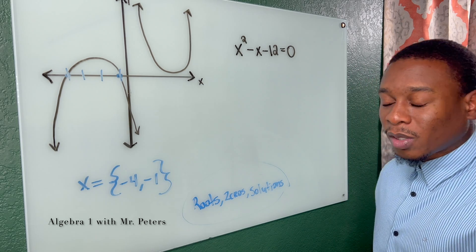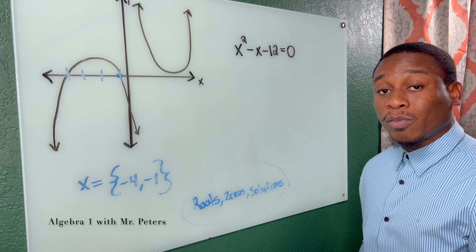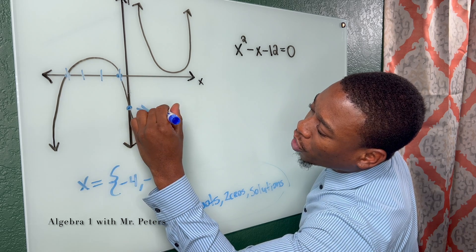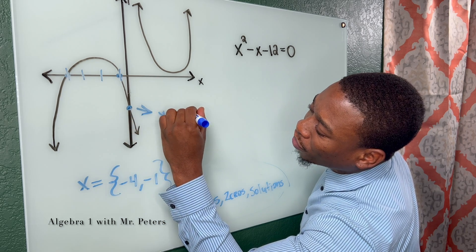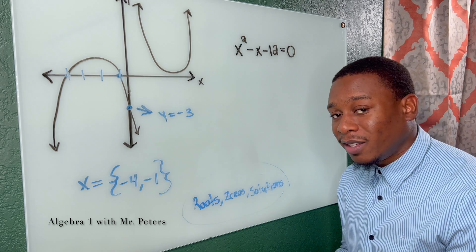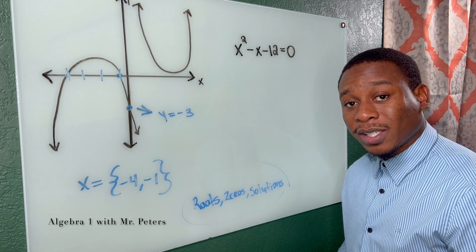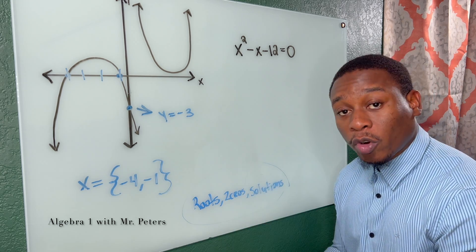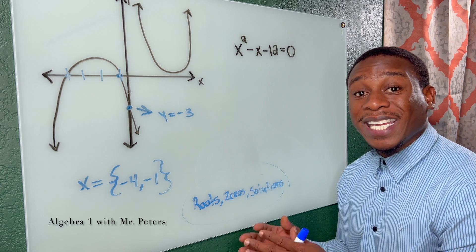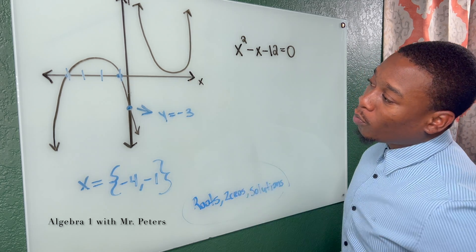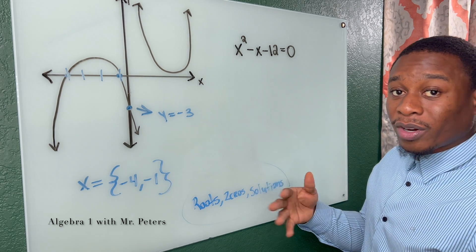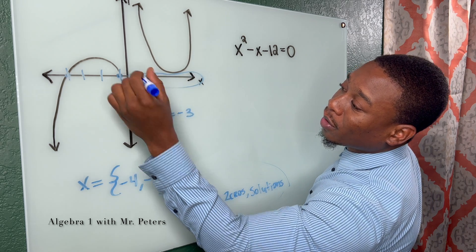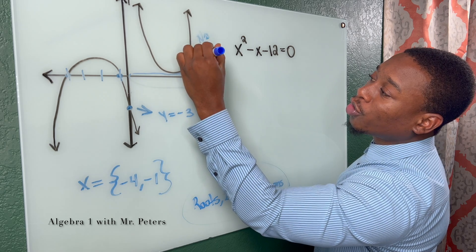Now, what students sometimes fail to realize or a mistake they make is they'll come to the y-axis and say, oh, Mr. Peters, it crosses the y-axis when y is equal to negative three. Let's say that's negative three. It doesn't matter if it crosses the y-axis. Solutions, roots, zeros of quadratic equations only refer to when the graph crosses the x-axis. So when we look at this quadratic graph right here guys, there is no solution because it does not touch this x-axis. So this would have no solution.